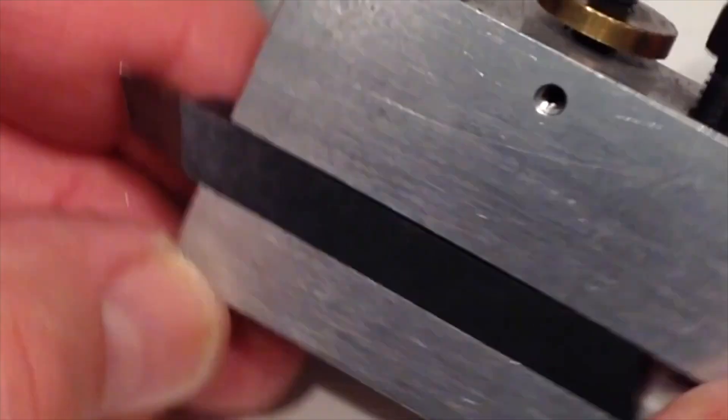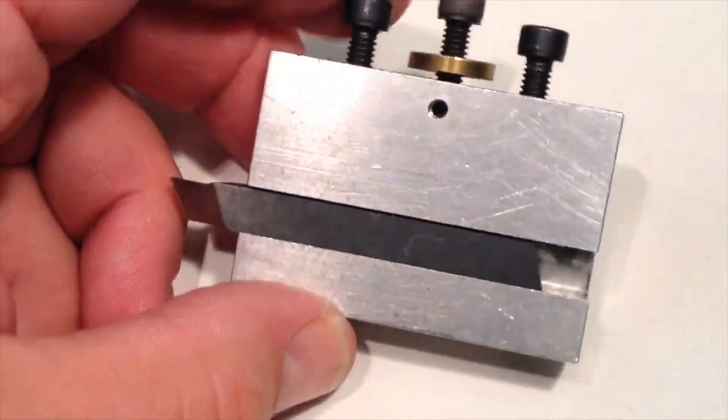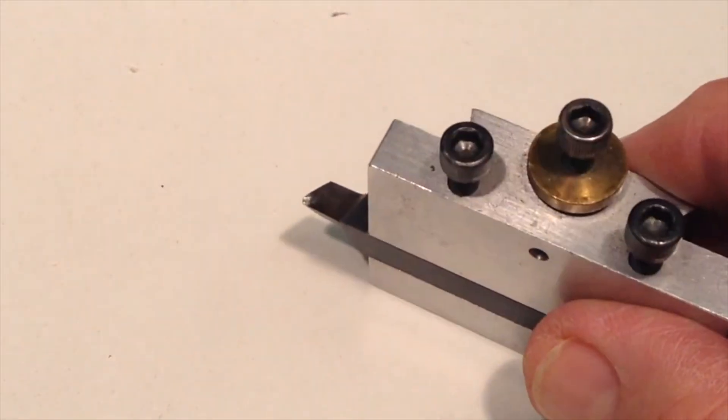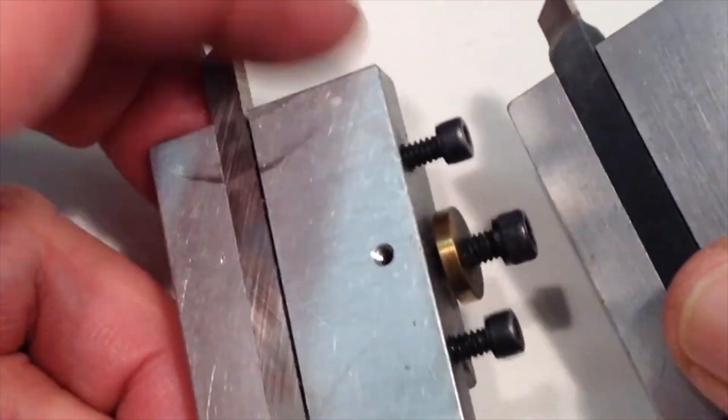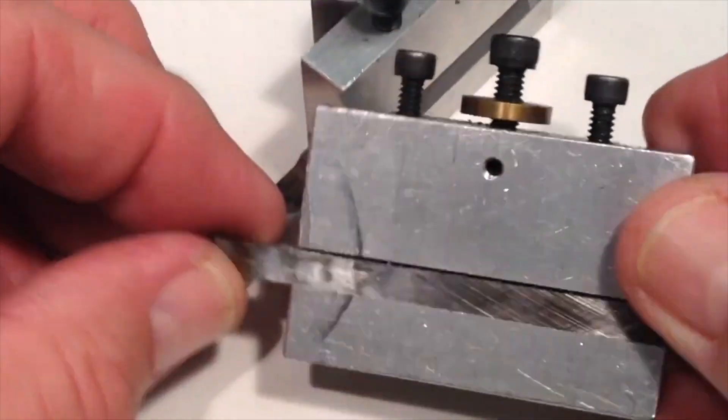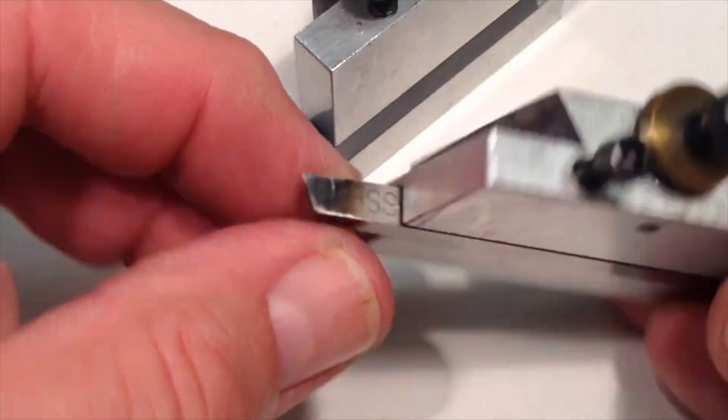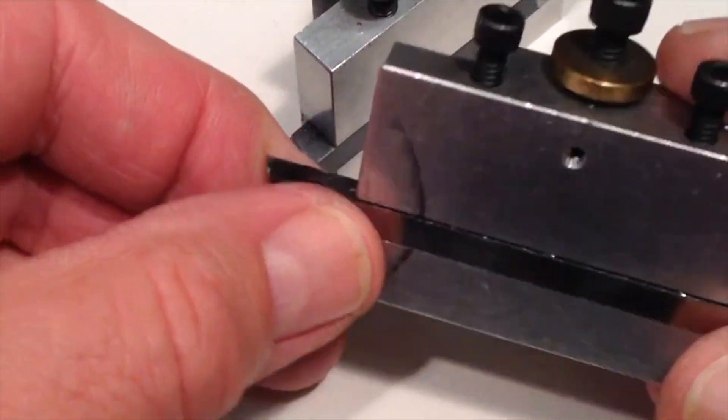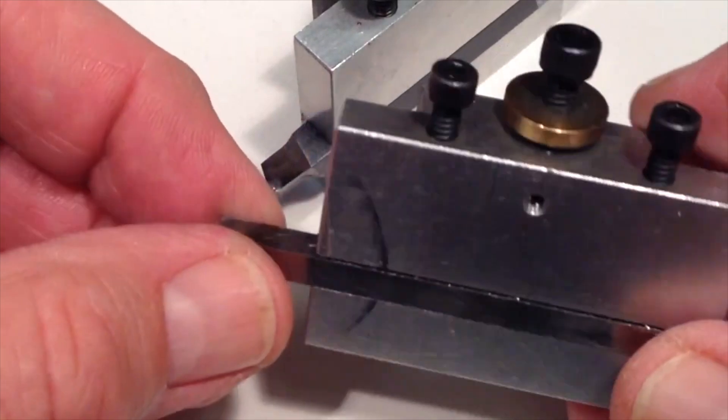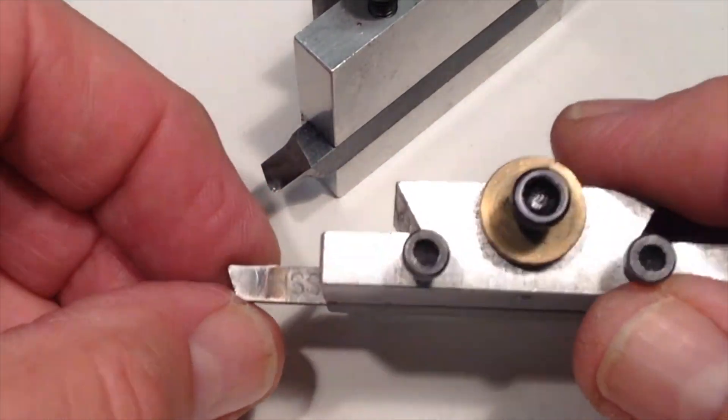One thing I wanted to mention, that I like to use the smaller size tools. And I can do that conveniently because I've made my own quick change tool post or quick change tool holder. And I've made some holders that are specifically designed for these smaller cross sectional tools. Because I like the way they work. I like the small tools for a lot of the small, fine work that I do.